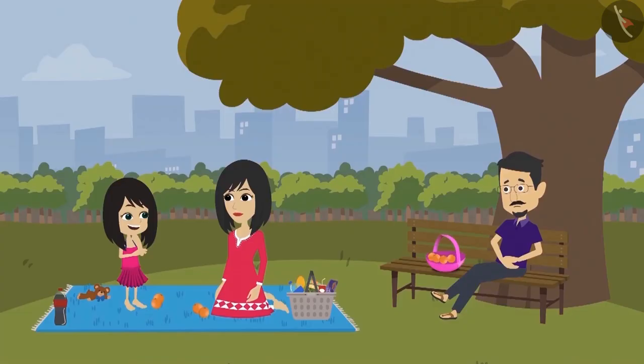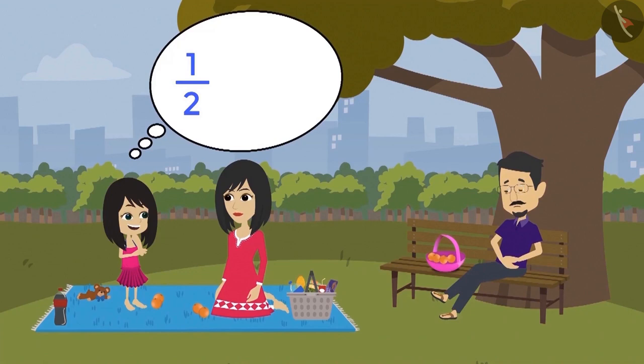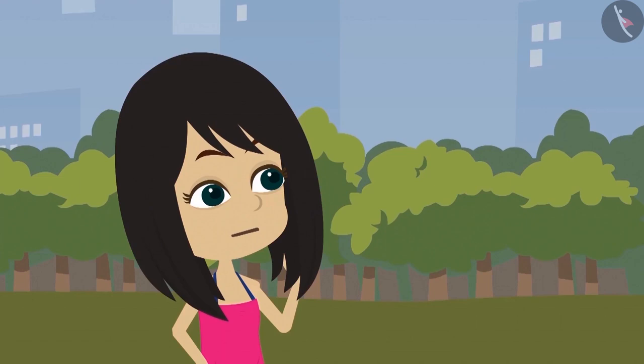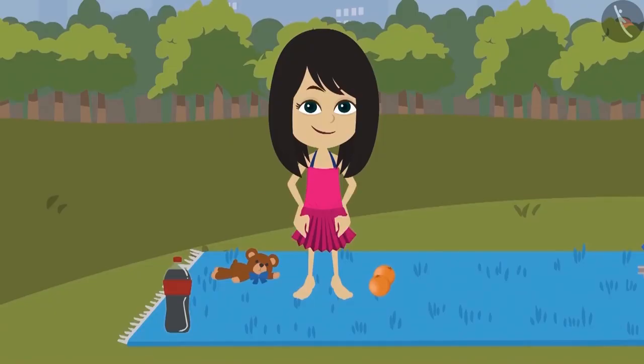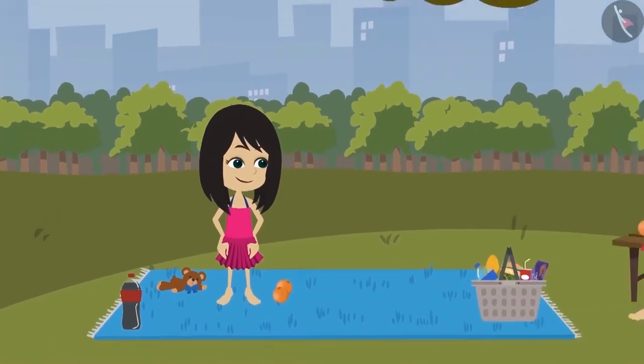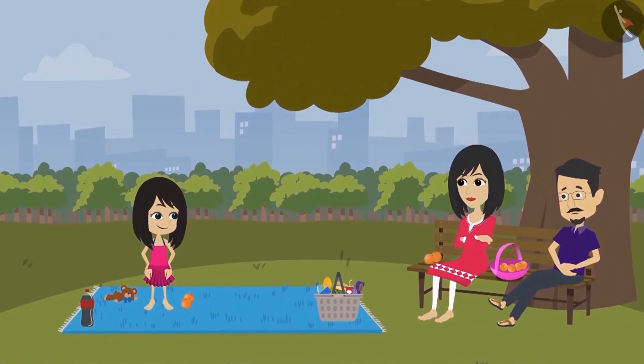Neha figured out how many oranges would come after adding half oranges and quarter oranges. But if she has to tell how much of the total oranges came in the share of her mother and father, how will she tell? Can you help Neha find out how much of the total oranges did Mummy and Papa get?